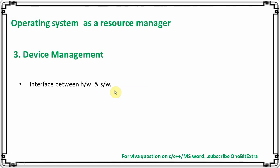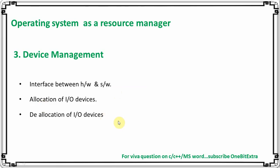When any input or output device has a demand from the user, the operating system checks which device is free, allocates that device to the process, and then de-allocates it when the usage of that device finishes by that particular process.